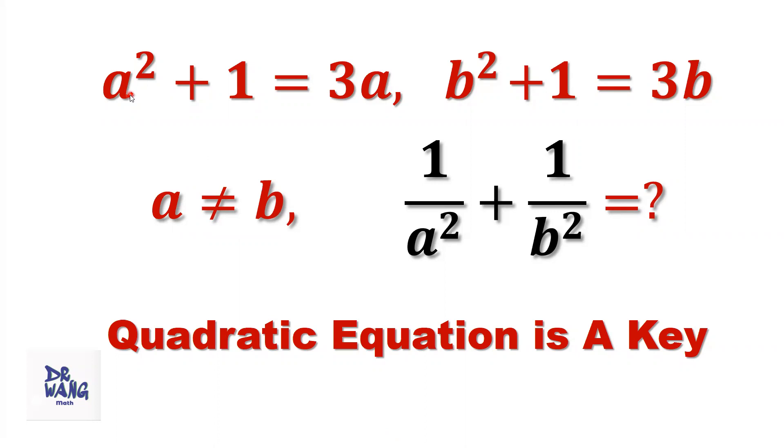If a squared plus 1 equals 3a, b squared plus 1 equals 3b, a does not equal to b, what is the value of 1 over a squared plus 1 over b squared?